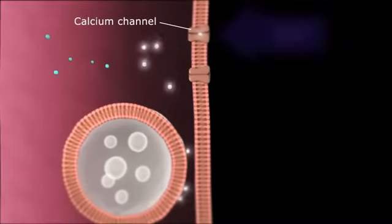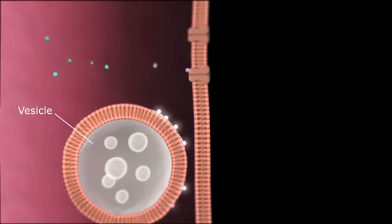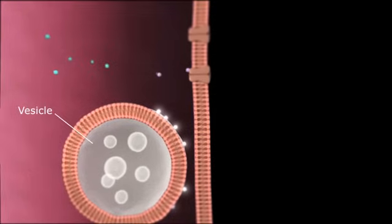This in turn opens calcium channels at the basal end of the cell, leading to vesicular transmitter release to stimulate the nerve.